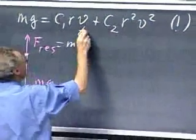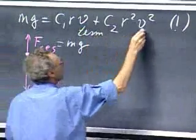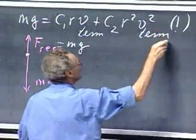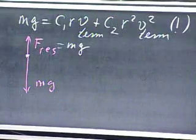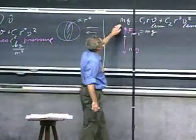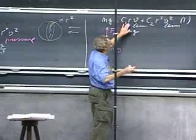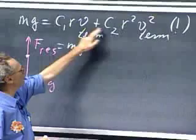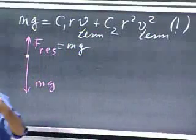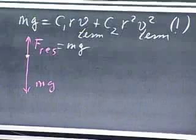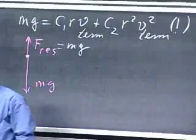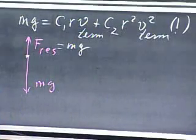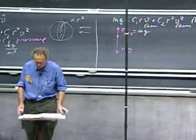That will be the case when mg equals c1·r·v plus c2·r²·v², giving us the terminal velocity. If you know the mass, the radius, and the values for c1 and c2 of the medium, you can calculate the terminal velocity. It is a quadratic equation, so you get two solutions of which one is non-physical and can be rejected.